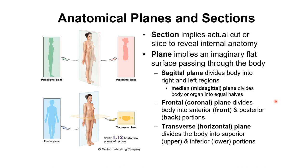The sagittal plane divides the body into right and left regions. A mid-sagittal plane divides the body or organ into equal right and left halves. A parasagittal plane also divides the body into left and right sections, but they are not equal — a mid-sagittal plane produces equal halves.